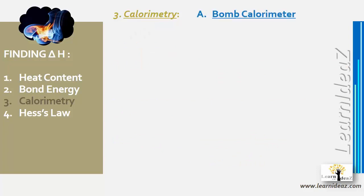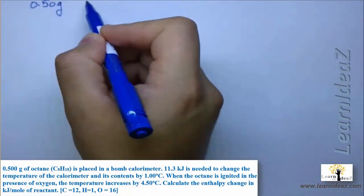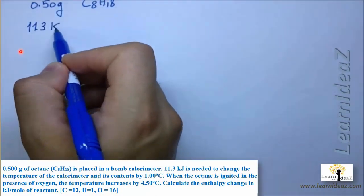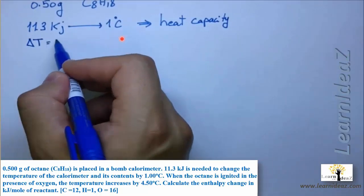Example: 0.5 grams of octane (C₈H₁₈) is placed in a bomb calorimeter. 11.3 kilojoules are needed to change the temperature of the calorimeter and its contents by 1°C — this is the heat capacity (not specific or molar). When octane is ignited in the presence of oxygen, the temperature increases by 4.5°C. Calculate the enthalpy change in kJ/mol.